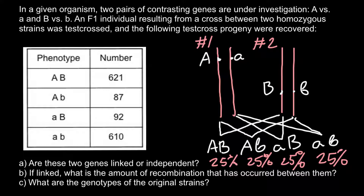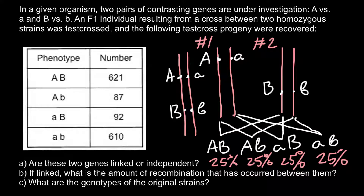But what if two genes are on the same chromosome? Imagine dominant allele A and recessive allele a are on one chromosome pair, and dominant allele B and recessive allele b are on the same chromosome. Segregation would not be independent. We would mainly find genotypes AB and ab in the gametes — these are the parental genotypes.